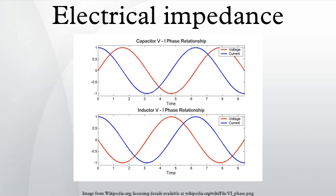The validity of complex representation: this representation using complex exponentials may be justified by noting that the real-valued sinusoidal function representing either voltage or current may be broken into two complex-valued functions. By the principle of superposition, we may analyze the behavior of the sinusoid on the left-hand side by analyzing the behavior of the two complex terms on the right-hand side. Given this symmetry, we only need to perform the analysis for one right-hand term; the results will be identical for the other. At the end of any calculation, we may return to real-valued sinusoids.